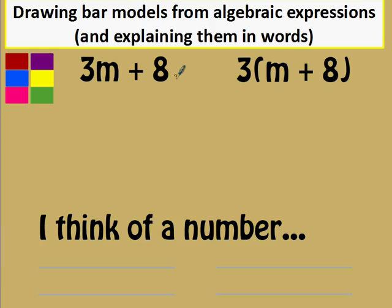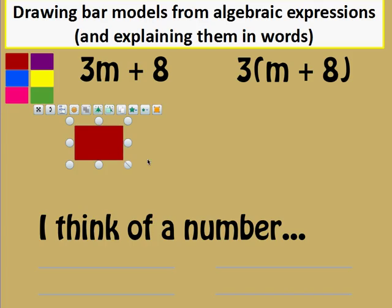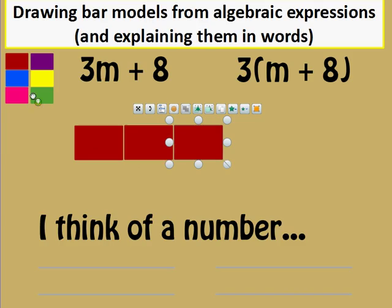Next, we've got two very similar looking expressions, 3m plus 8 and 3 brackets m plus 8. Let's have a look at the bar model for those. This is going to be our box for m and then it says that we need three of them because we multiplied by three.